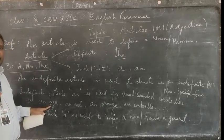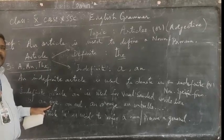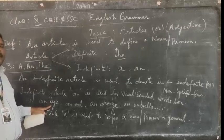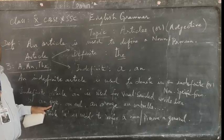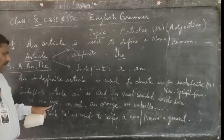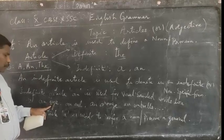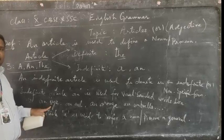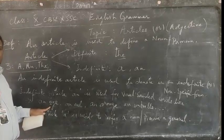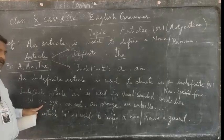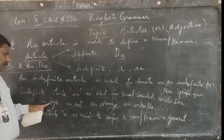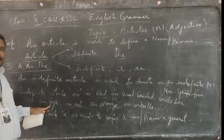For the word 'eye', there is a necessity to use AN before it because it starts with a vowel sound — a vowel-sounded letter. Similarly, AN orange: O is a vowel and it goes with a vowel-sounded word. Since it begins with a vowel sound, there is a necessity to use AN — for example, AN orange.